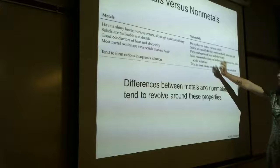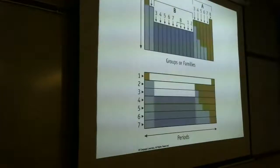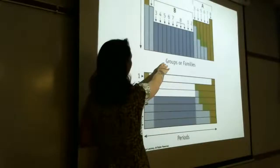The opposite of metals would be non-metals. Most of them are not solid at room temperature — a lot are liquids and gases. There are some that are solid, like carbon in the form of graphite, which is actually what's in your pencil, not lead. Non-metals are brittle and poor conductors of heat and electricity. If you know the properties of one, you know the properties of the other by opposite.